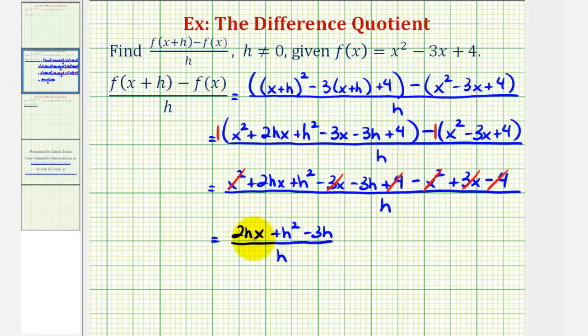Notice each term in the numerator contains a common factor of h, so we're going to factor out the common factor of h from the numerator. That will leave us with h times the quantity two x plus h minus three, still divided by h. But now we have h over h, that simplifies to one, so our simplified difference quotient is just two x plus h minus three.